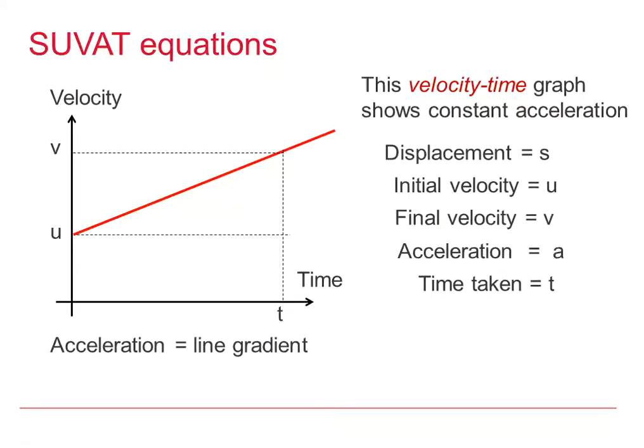So here we have a velocity-time graph which shows constant acceleration. I can see the acceleration is constant because the gradient is constant. We defined S as displacement, U as initial velocity, V as the final velocity, A as the acceleration, and T as the time taken.